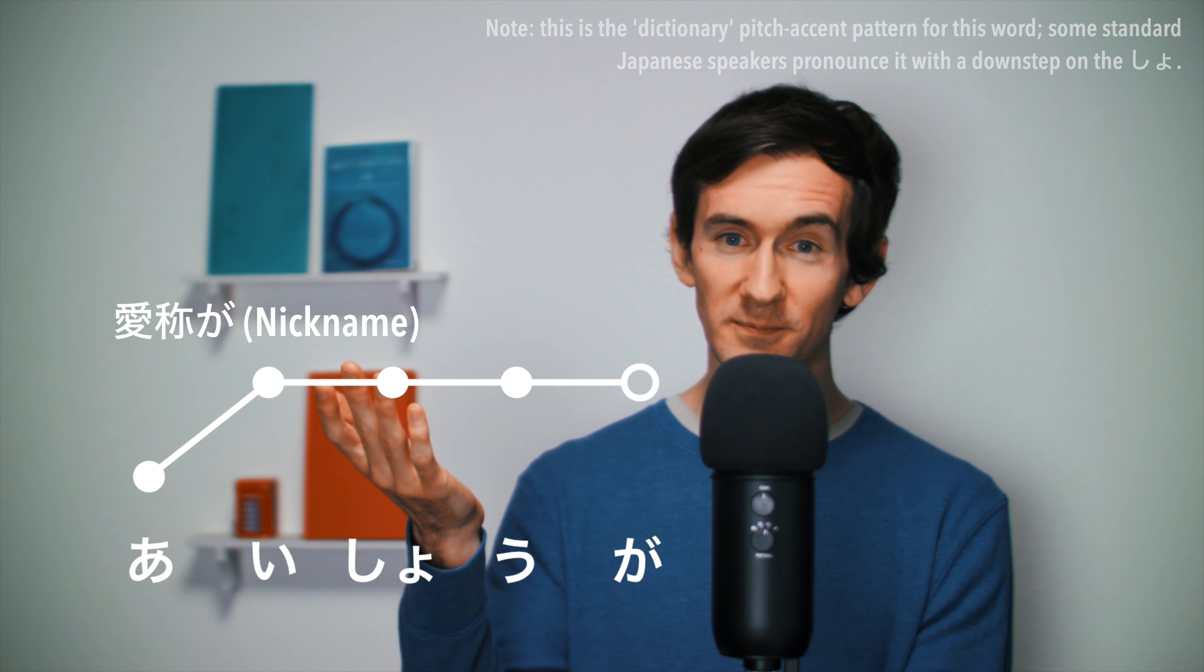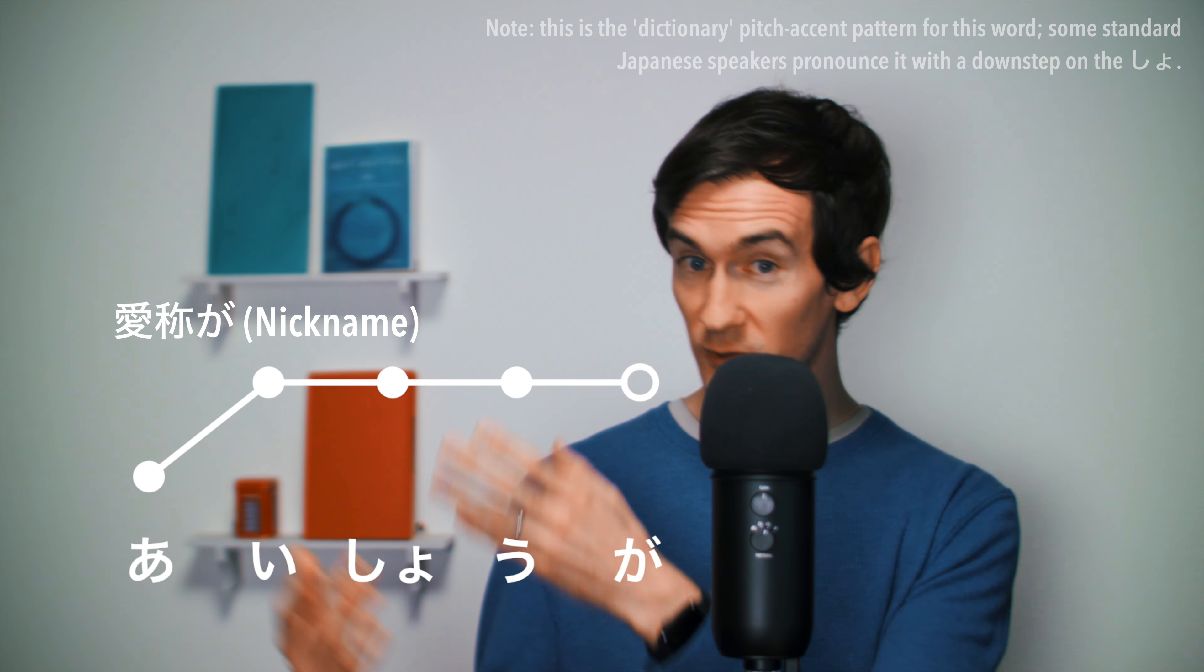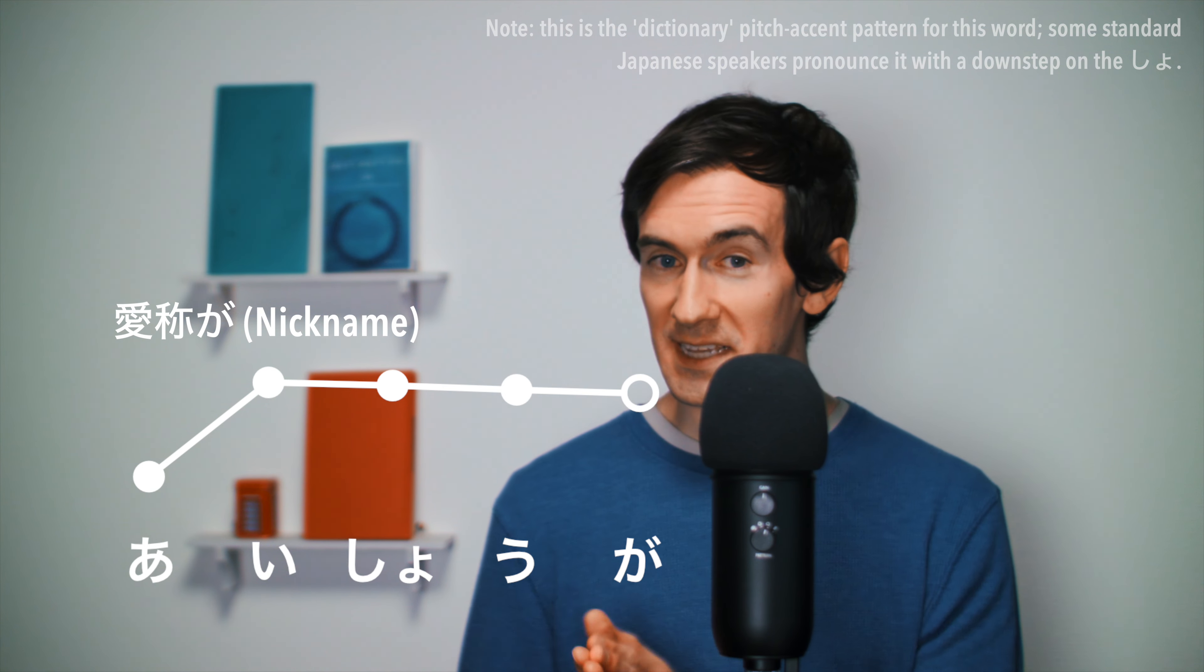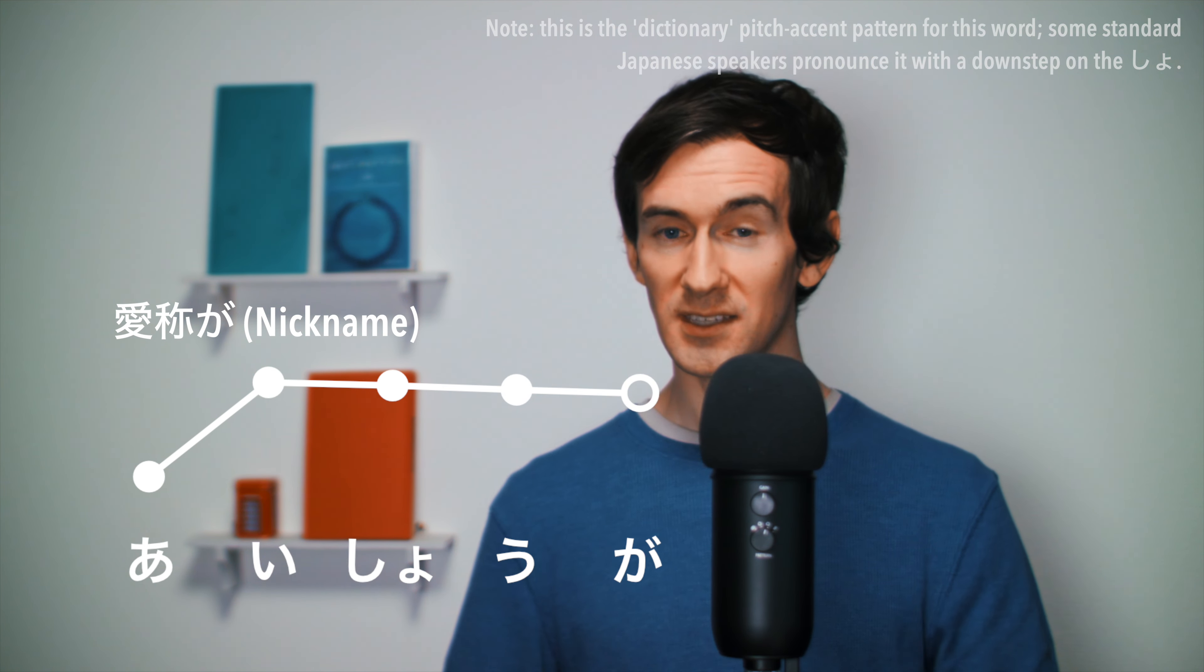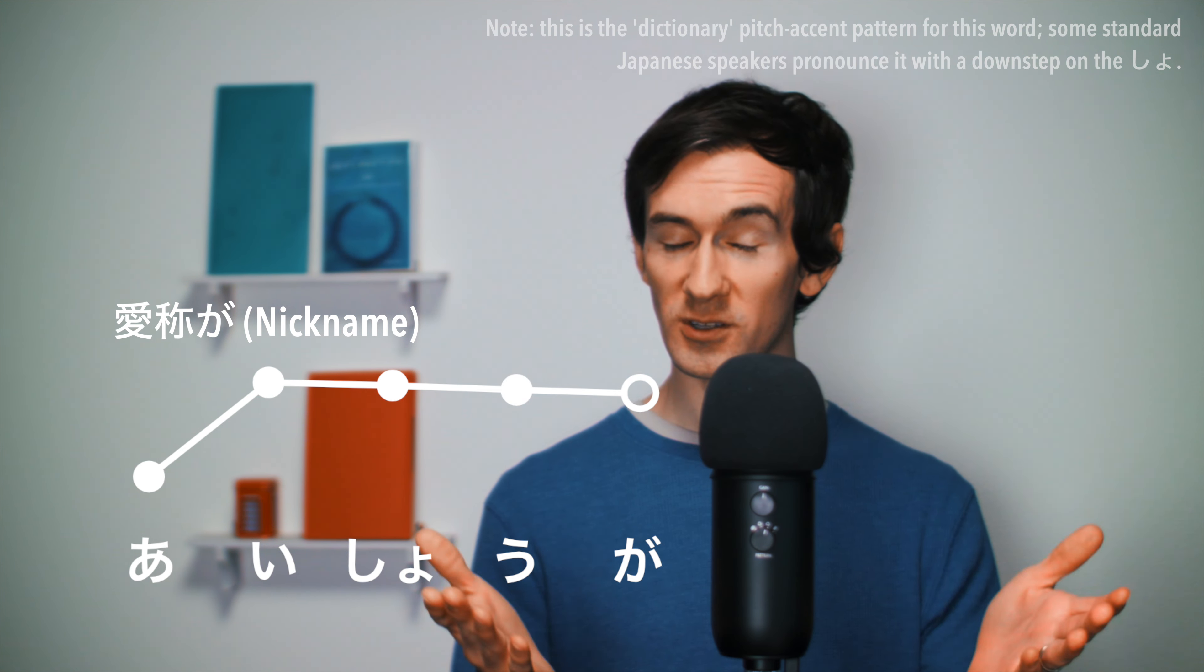That is to say, a binary pitch accent graphic for the heiban Aishou-ga will look like this, but an actual spectrograph for this word will typically look more like this. And again, we happen to have a native recording for this word as well as it was also used in the previous lesson. So let's see what the spectrograph of the native recording looks like.